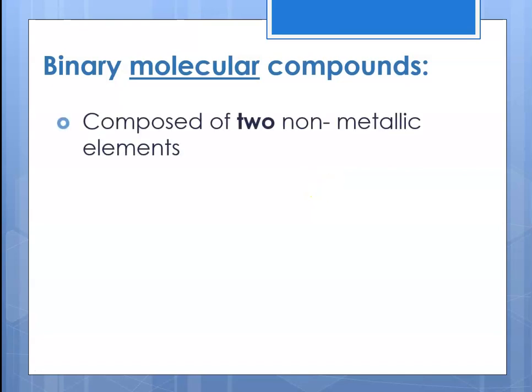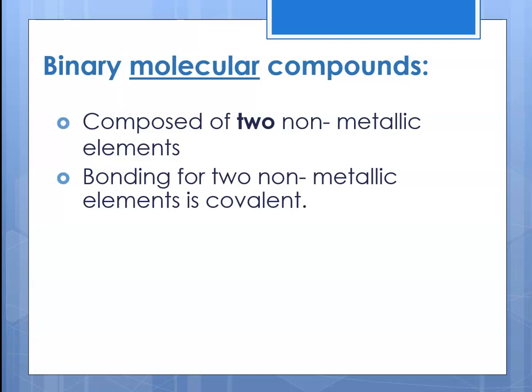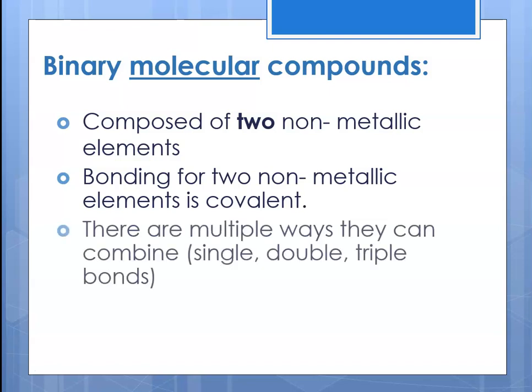Binary molecular compounds are composed of two non-metallic elements. Since it's non-metal and non-metal, this bonding is covalent. There are multiple ways that non-metals can combine with covalent bonds — specifically, there might be single bonds, double bonds, triple bonds, or some combination.